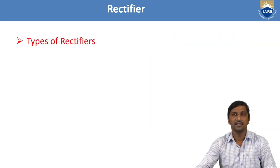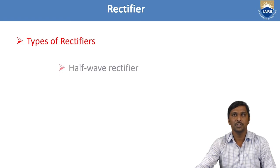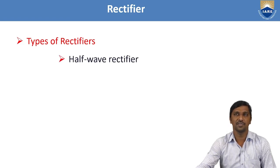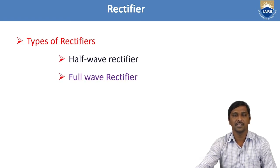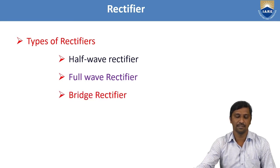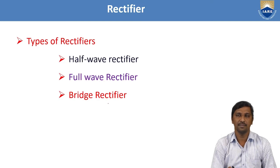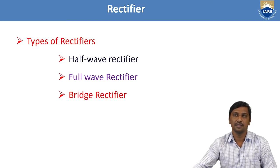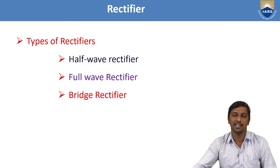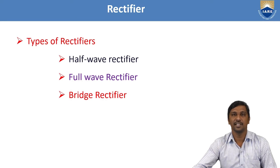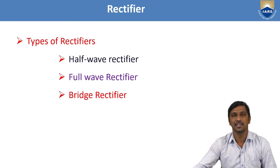There are different types of rectifiers. The first one is the half-wave rectifier, the second one is the full wave rectifier, and another one is the bridge rectifier. Today we are going to cover the bridge rectifier — its construction, analysis, and important parameters.